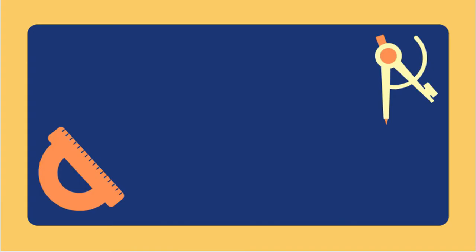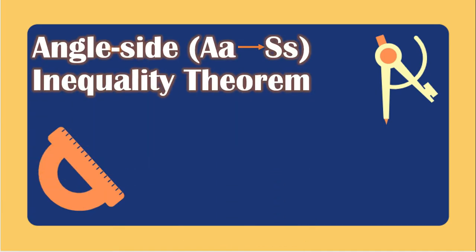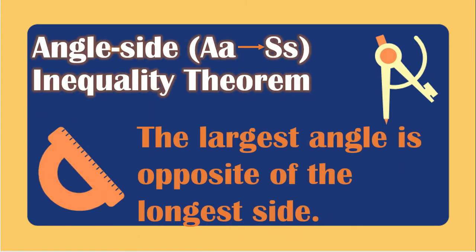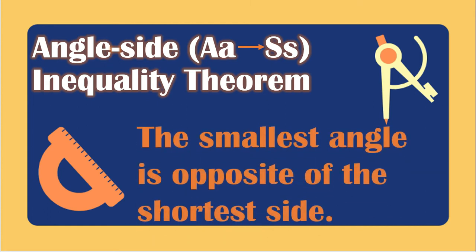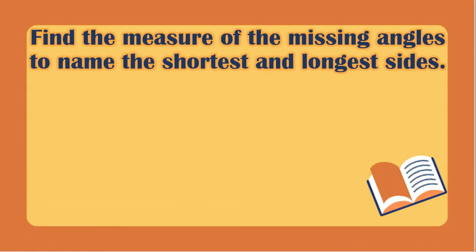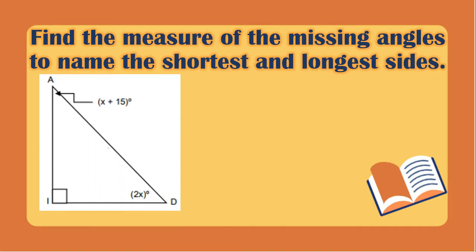Next we have the angle side inequality theorem, wherein the largest angle is opposite the longest side and the smallest angle is opposite the shortest side. We will find the measure of the missing angles to name the shortest and the longest side. First we need to find the value of x.